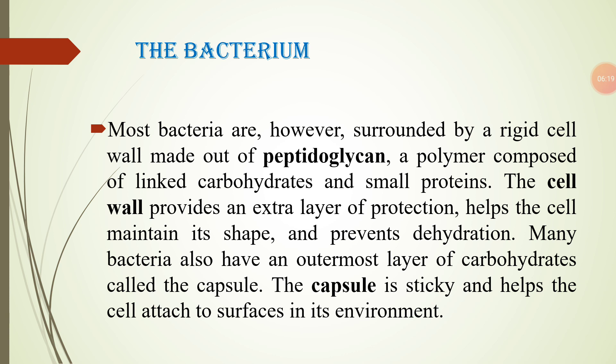Most bacteria are surrounded by a rigid cell wall made of peptidoglycan, a polymer composed of linked carbohydrates and small proteins. The cell wall provides an extra layer of protection, helps the cell maintain its shape, and prevents dehydration. Many bacteria also have an outermost layer of carbohydrate called a capsule.